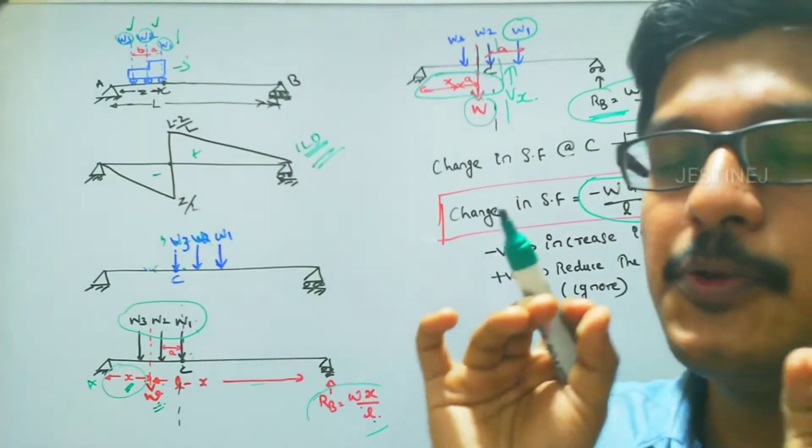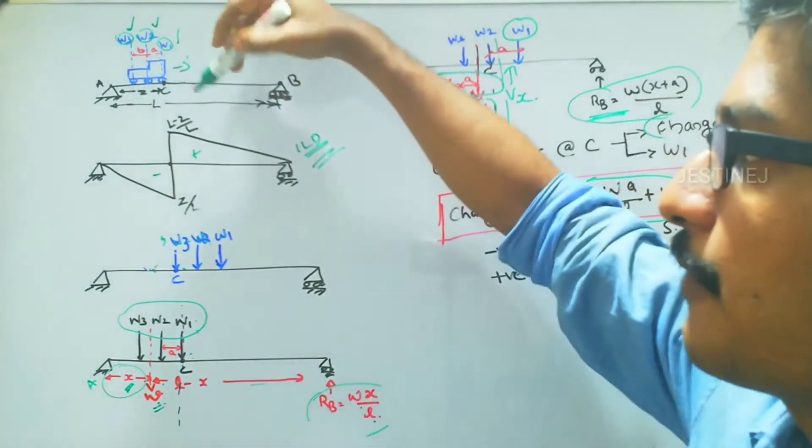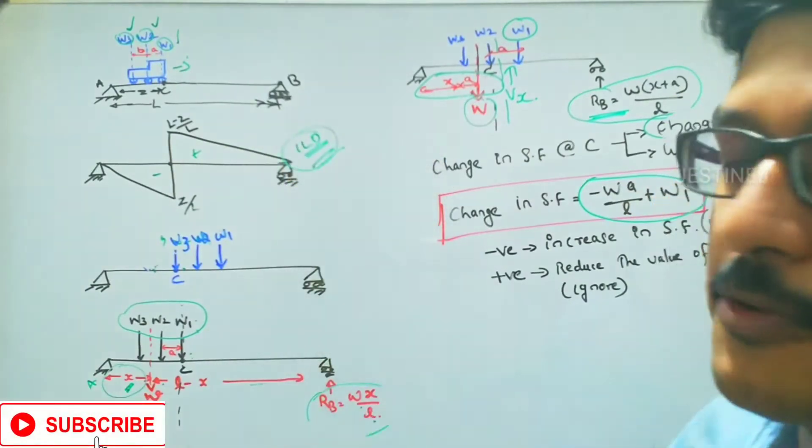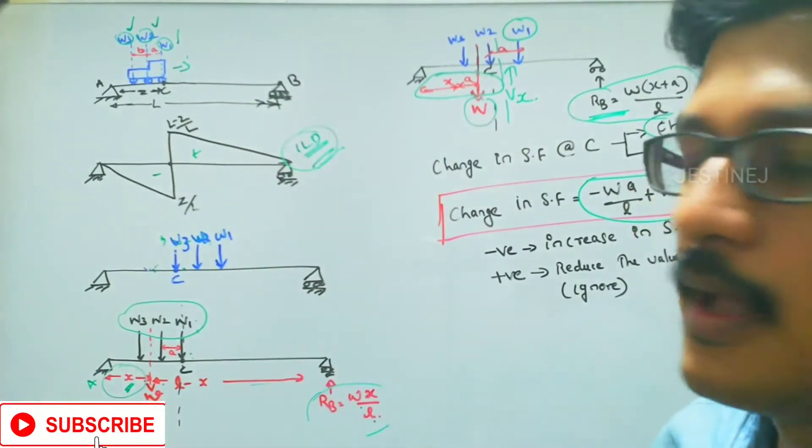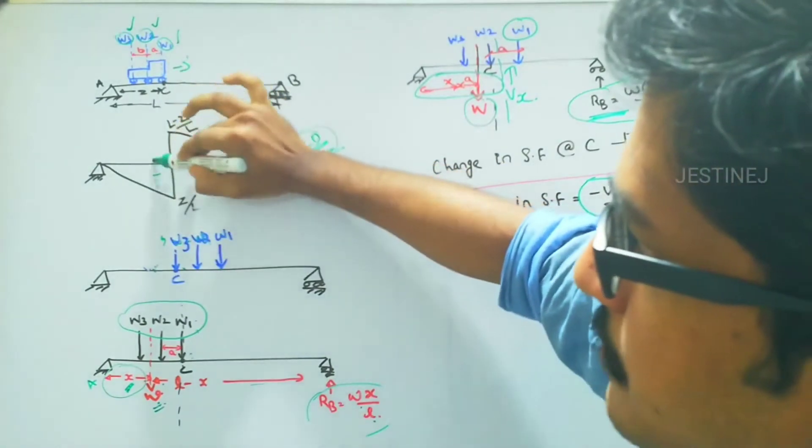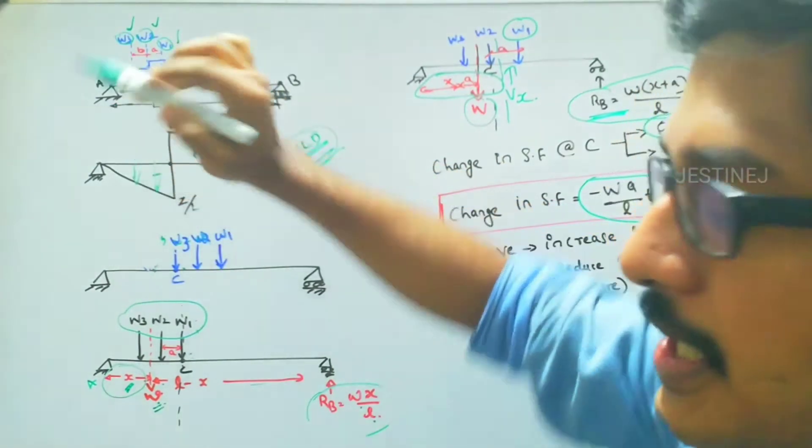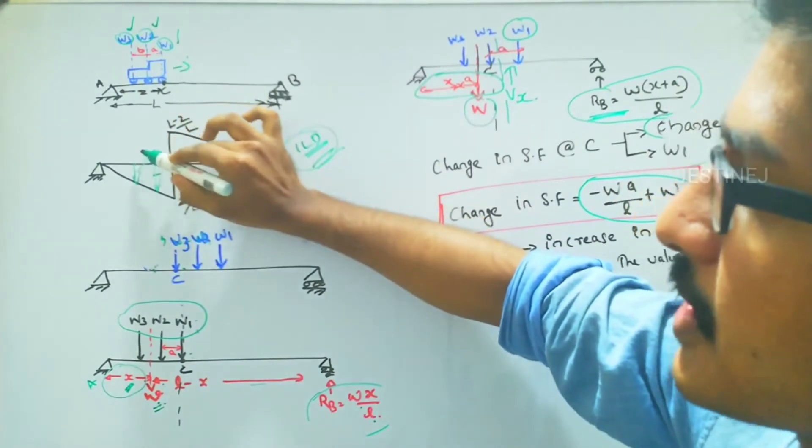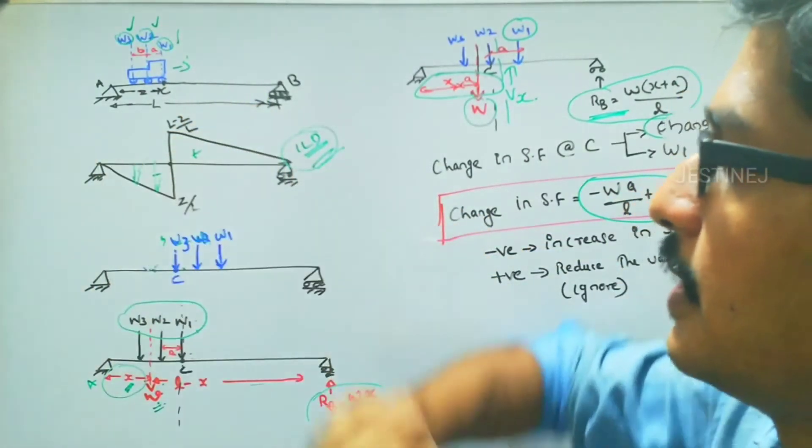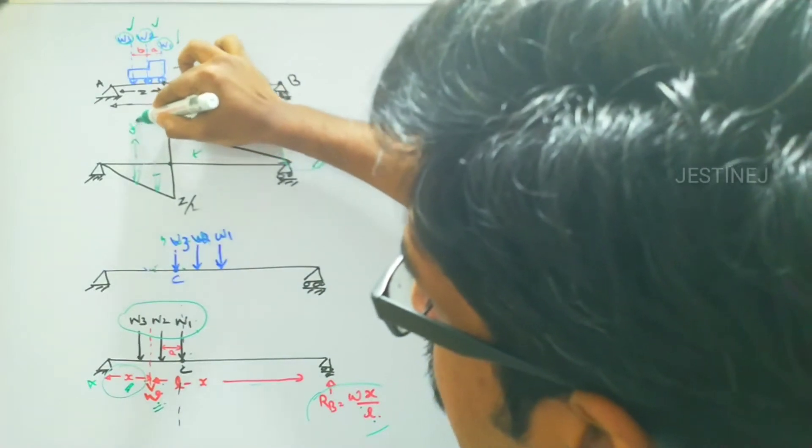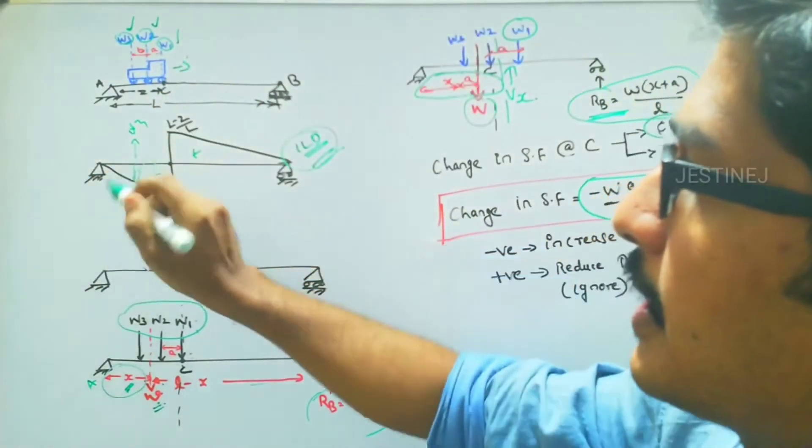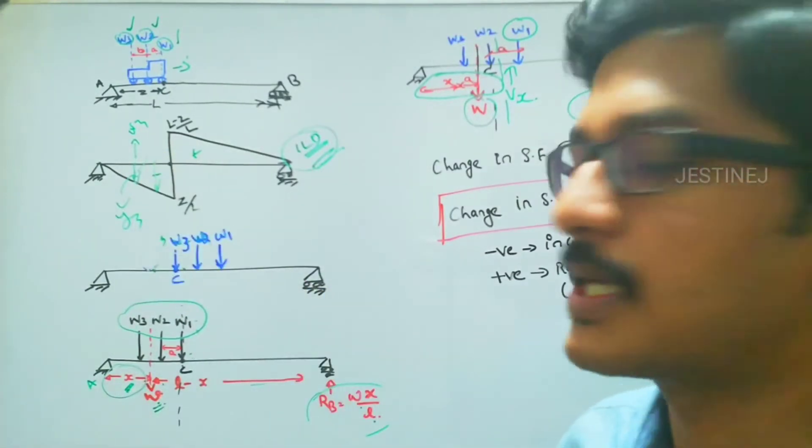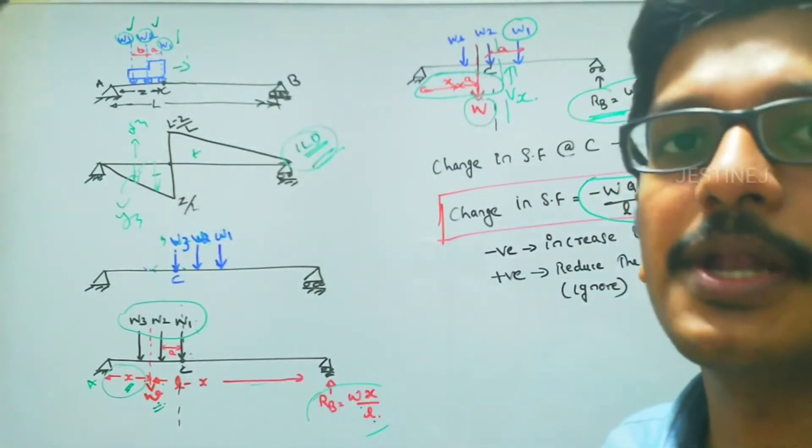So if a unit load is traveling, we can draw the influence line diagram for a unit load in this format. If a series of loads is active, the loads value will have different ordinates at the point. If W3 is active, W3 multiplied by, let us assume, this ordinate Y3. So W3 multiplied by Y3, likewise we can easily find out the shear force.